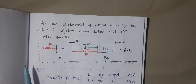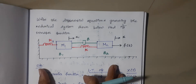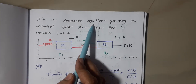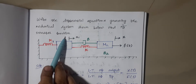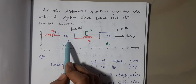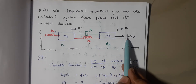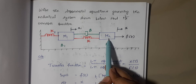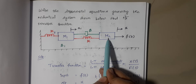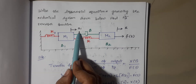Hello students, I am Kausalya. Today we are going to solve this problem. In this problem we are asked to find the differential equations and then the transfer function. This diagram consists of two masses, namely m1 and m2, and here f(t) is the applied force which is directly on mass m2. Because of this force, the respective displacement by mass m2 is x and by mass m1 is x1.